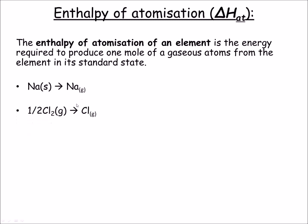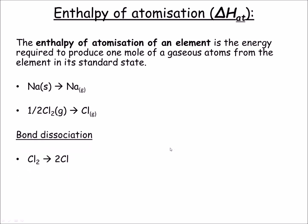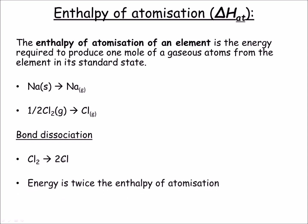Another example involves chlorine. Because we need one mole of chlorine in the gas state, we need a half of a chlorine molecule in its standard state — hence why I put a half in front of the Cl₂. Bond dissociation is slightly different to atomization. If I was to dissociate the bond between the two chlorine atoms, I would end up with two chlorine atoms and the energy is twice the enthalpy of atomization.